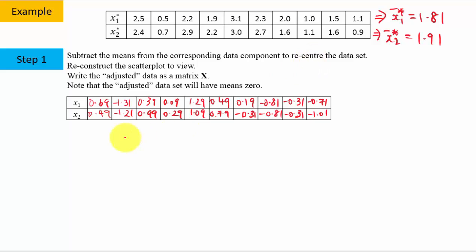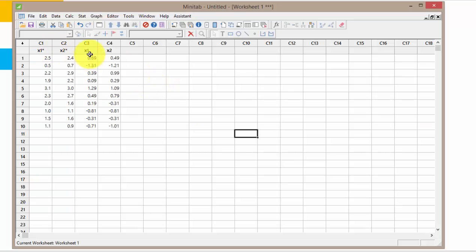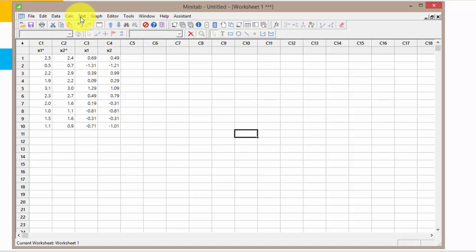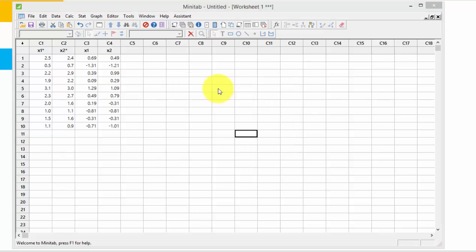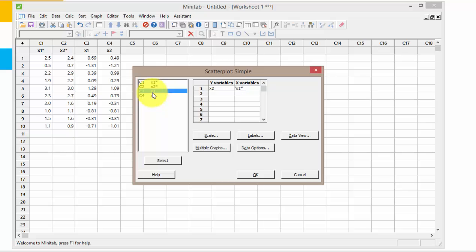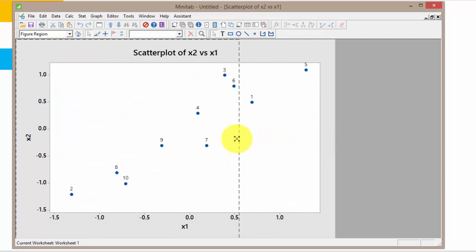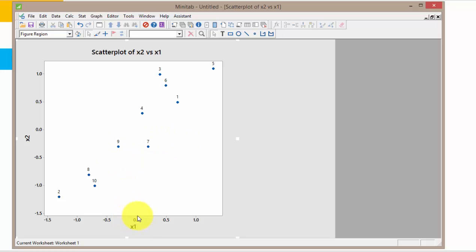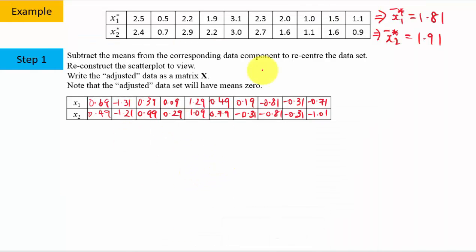So this data set which has been re-centered, I call the first variable x1 without the star and the second variable x2 without the star. So this data set has been re-centered such that the center is at 0. You can reconstruct the scatter plot to take a look. So I've input the re-centered data into my Minitab because I just want to create the scatter plot to make sure or just to take a look that it has been re-centered such that the center is at 0. So if you can see the center is now at 0. So we shall now use this re-centered data set to find the covariance matrix.